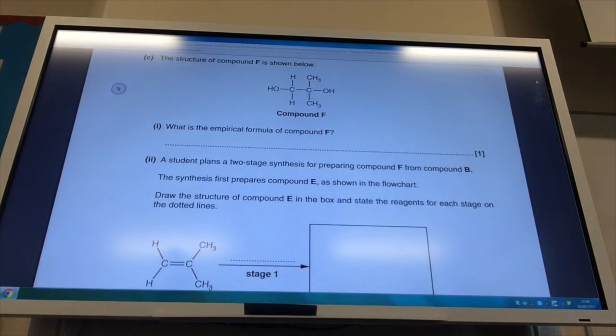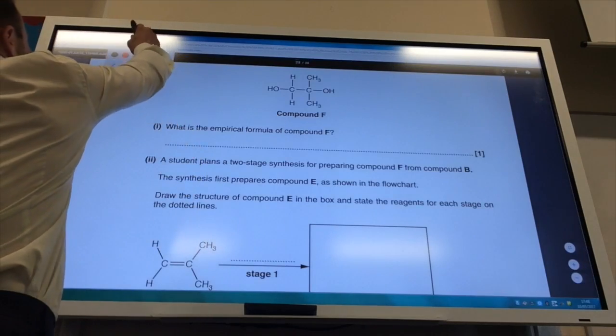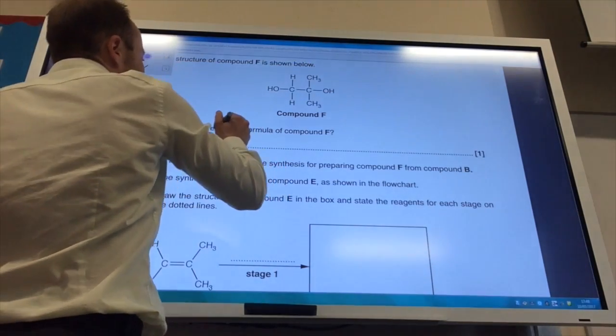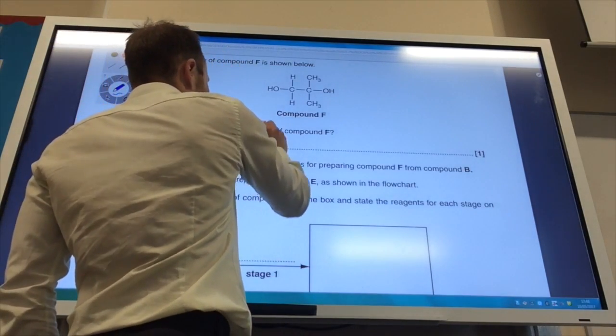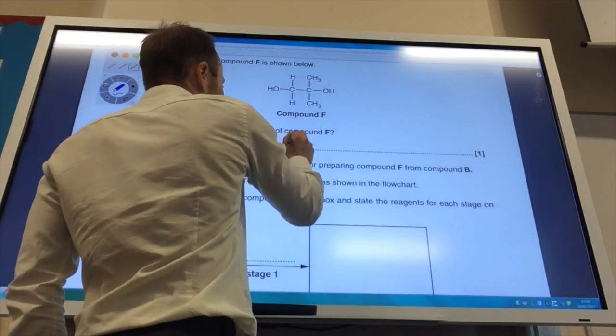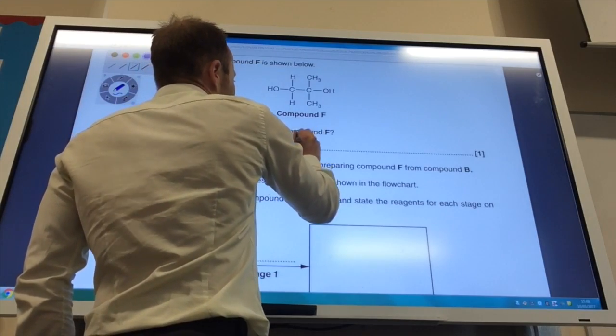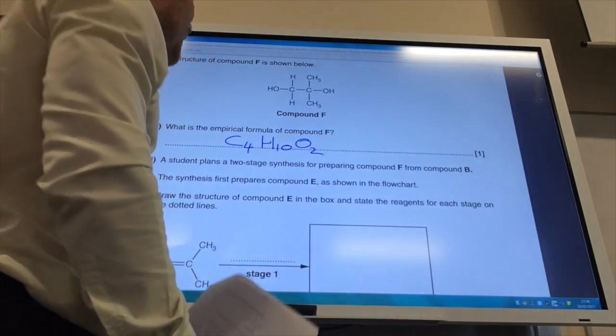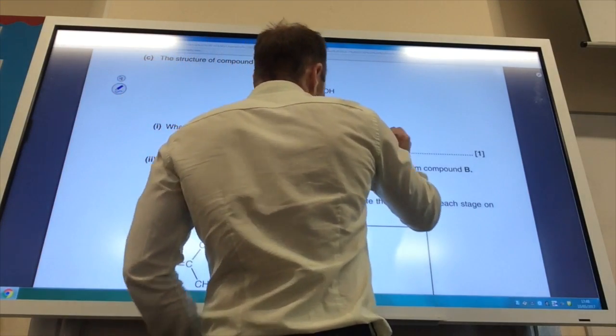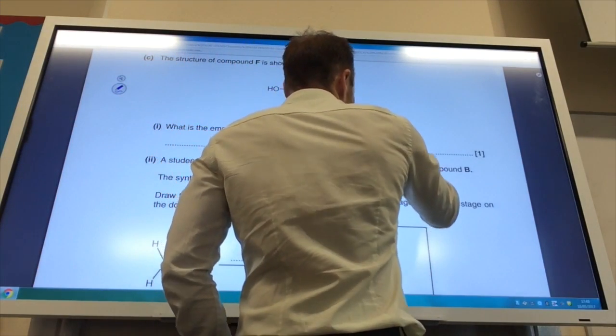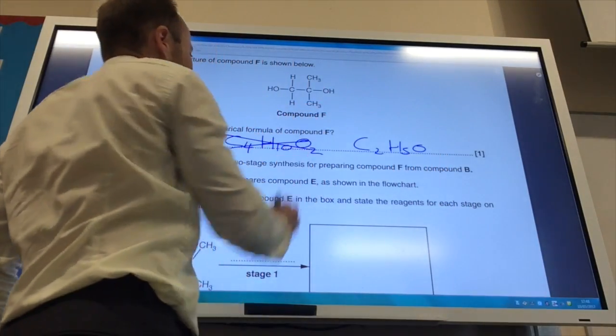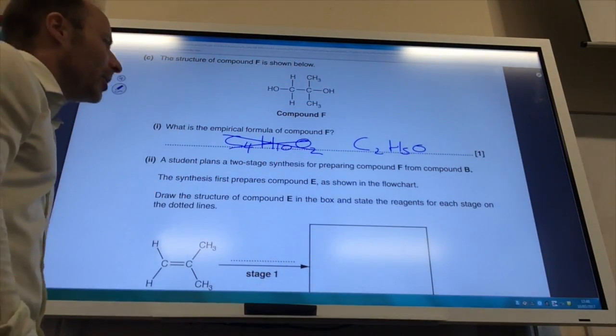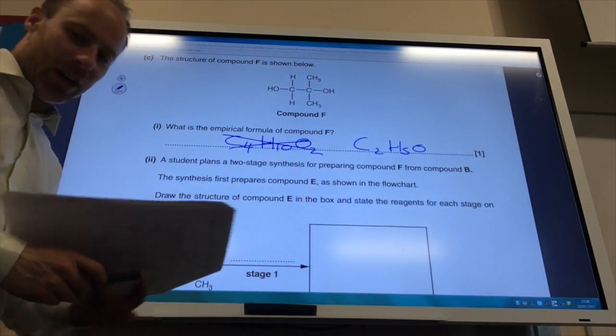Right, so we're into the final page now of the paper, and it wants me to calculate that, or work out an empirical formula. So, you count up your atoms. You should see that you have got four carbons there. You have got ten hydrogens, and you have got two oxygens, and you can simplify that down into C2H5O. If you've done that, then just cross through your answer so the examiner knows to ignore it. So, C2H5O.